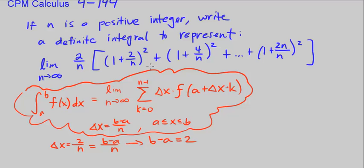Also, we're adding here, we're taking our function a, a plus delta x times k. Well, we already see delta x in every one of these. If delta x is 2 over n, then we see delta x here, delta x here, delta x here. What we don't see is the a. Well, the a is right here, so we're told that a is equal to 1.